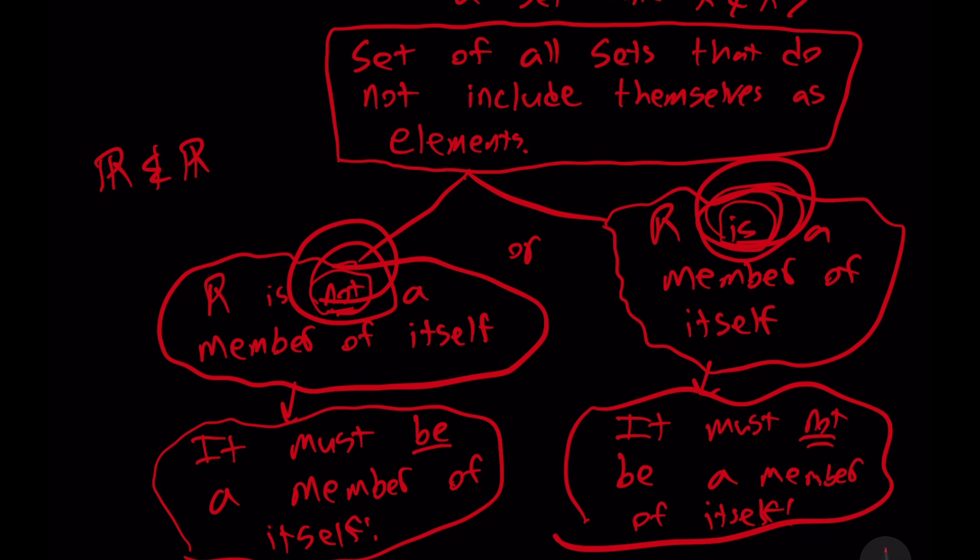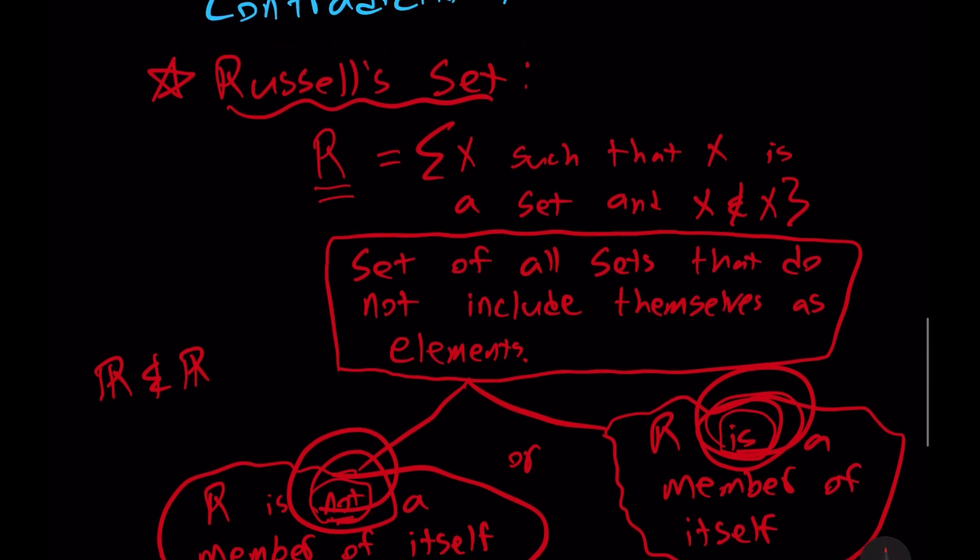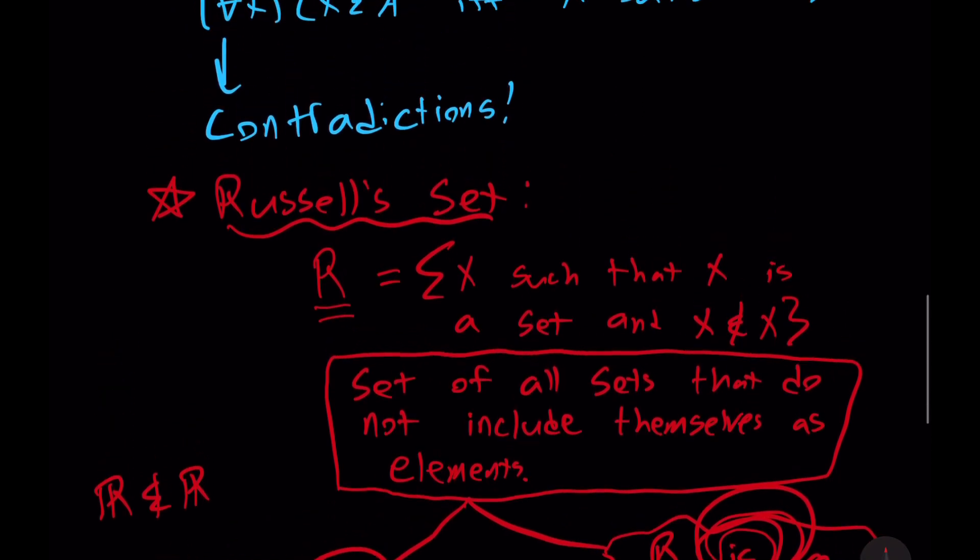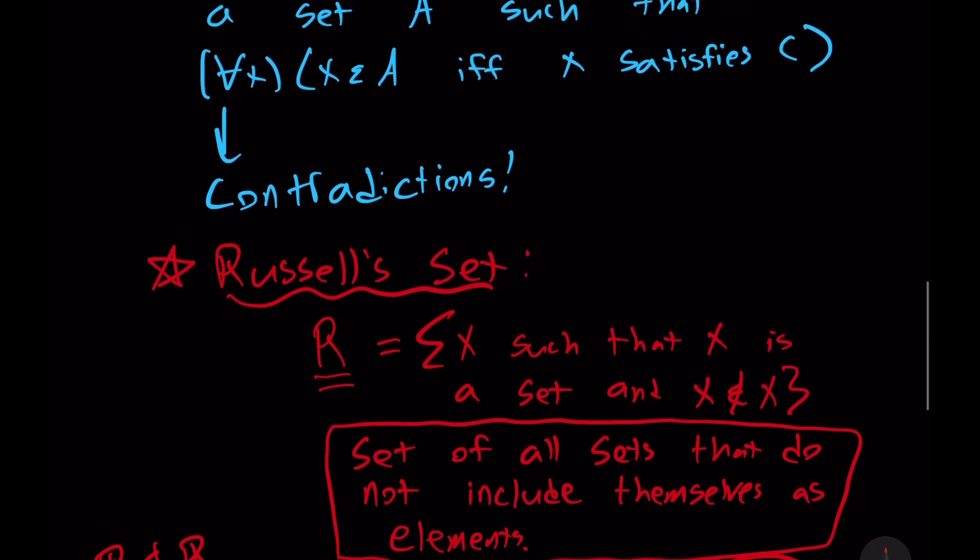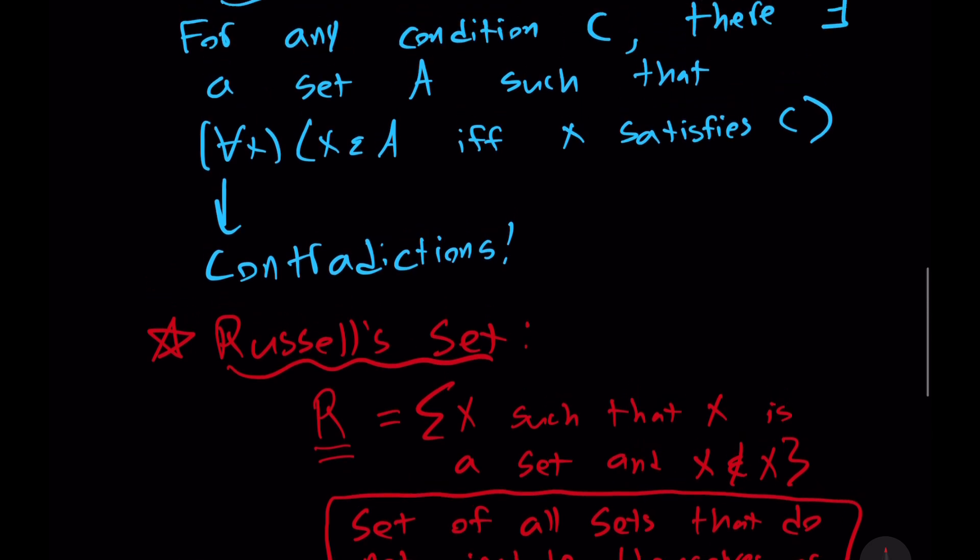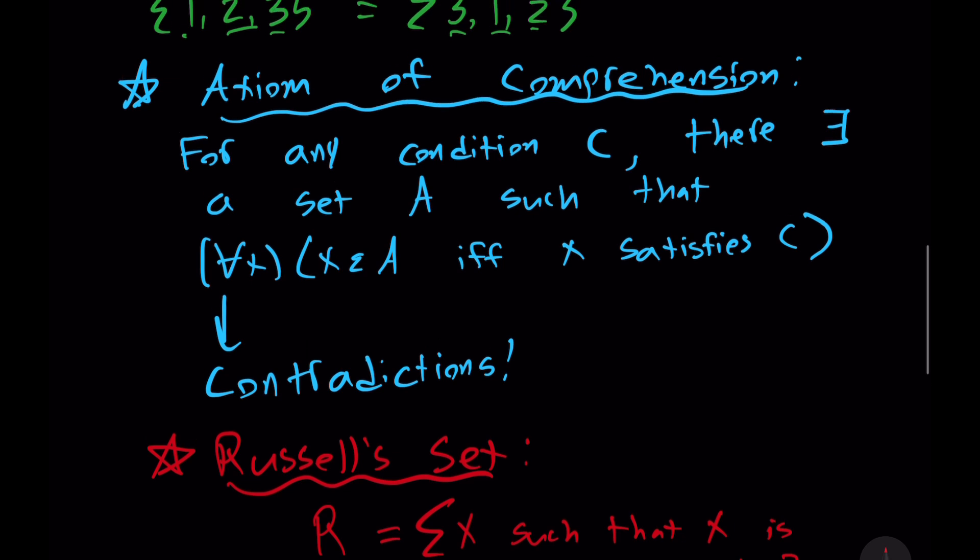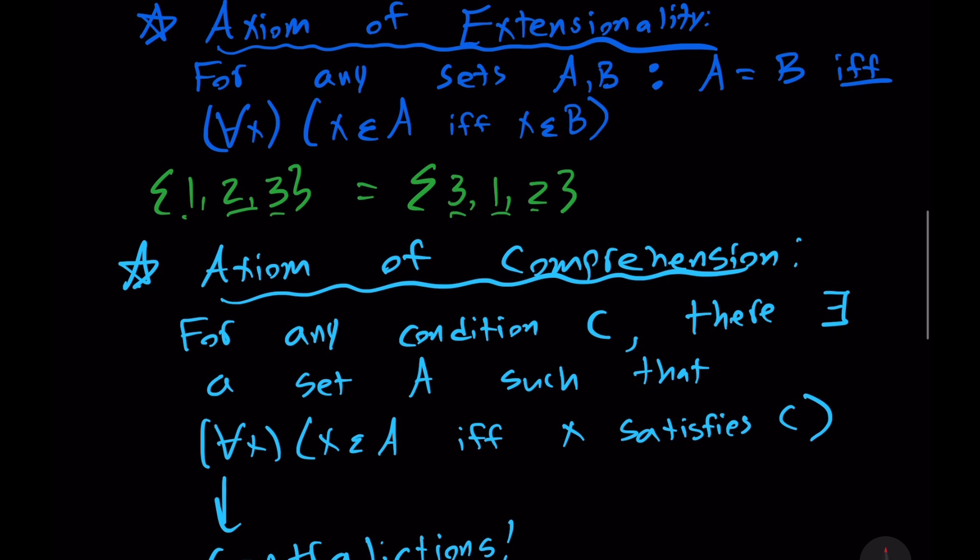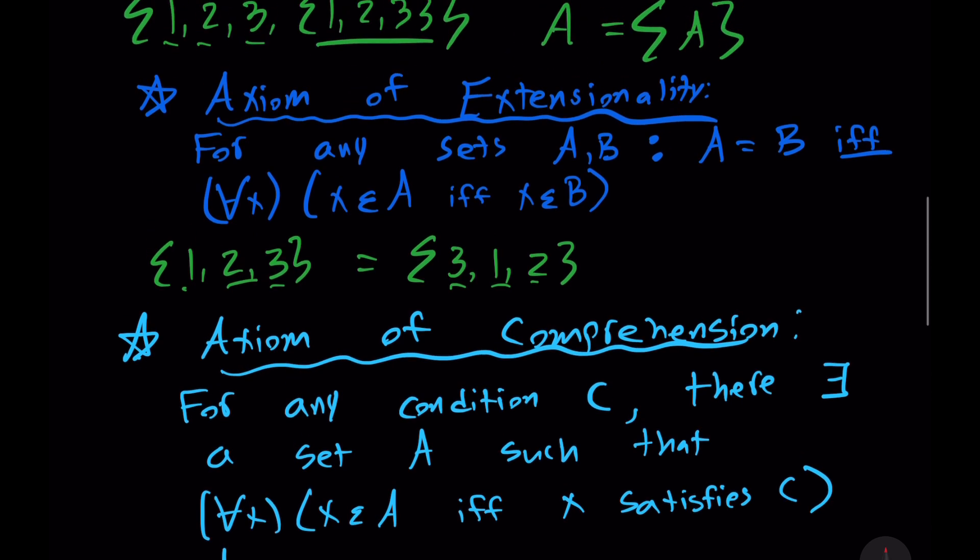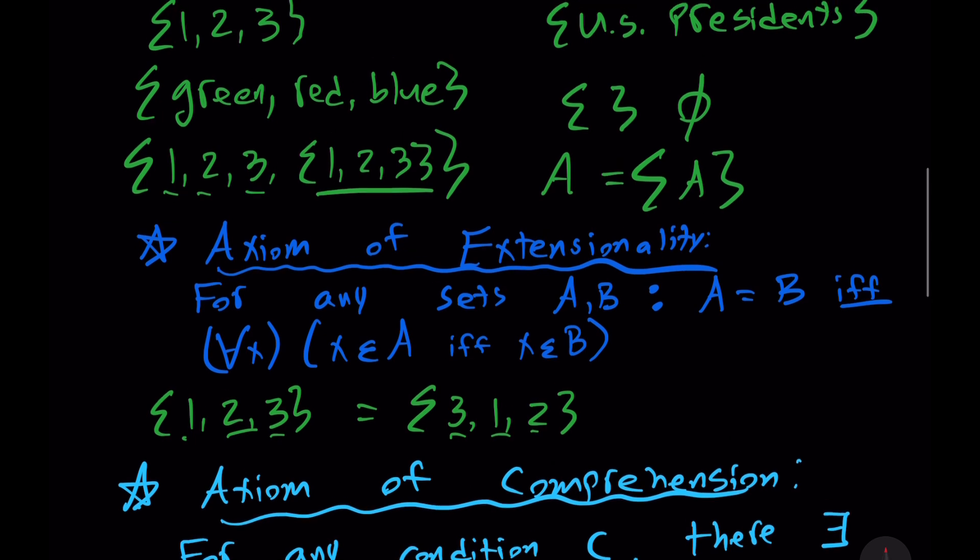That is Russell's paradox. Because either the set of all sets that does not include themselves as members includes itself as a member, and then in that case, it's not included itself as a member because it cannot be a member of itself. But if we exclude it as a member, that is a set that does not include itself as a member, and so it should be a member. Either way, we just end up in a big fat contradiction. This is exactly what led Bertrand Russell to develop a theory of types, because he wanted to get rid of the contradiction.